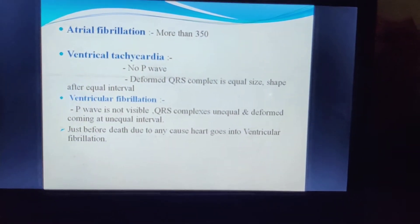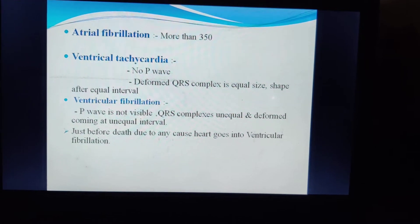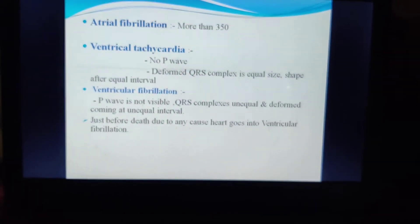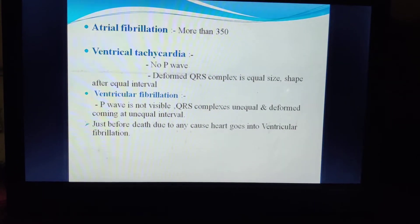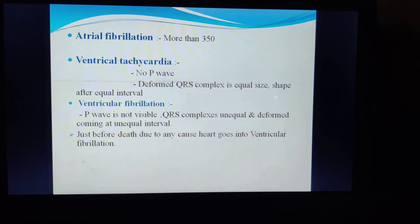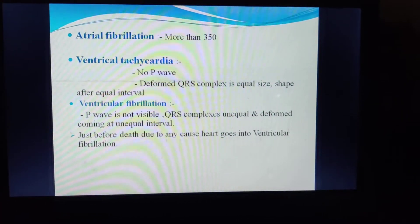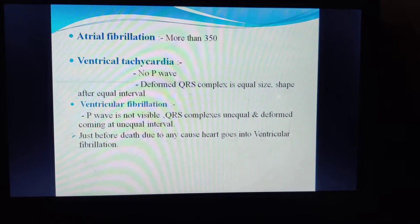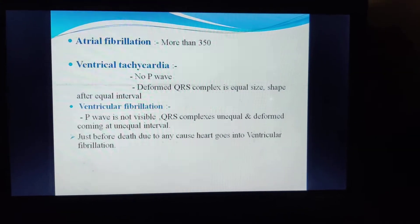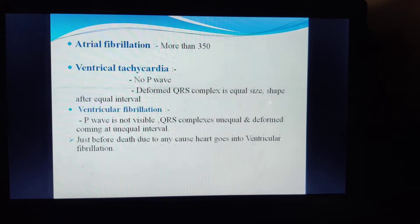Ventricular tachycardia — there is no P wave; a deformed QRS complex of equal large shape appears at equal intervals. Just before death, due to any cause, the heart goes into ventricular tachycardia.